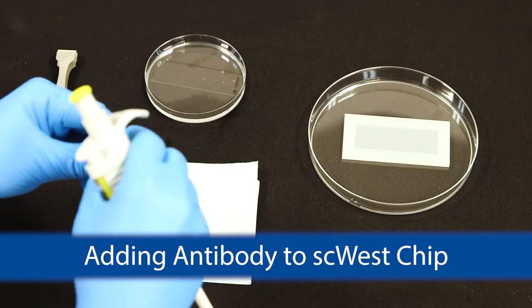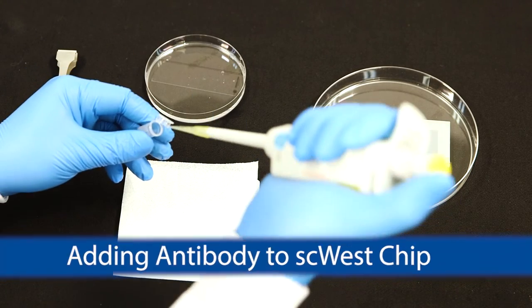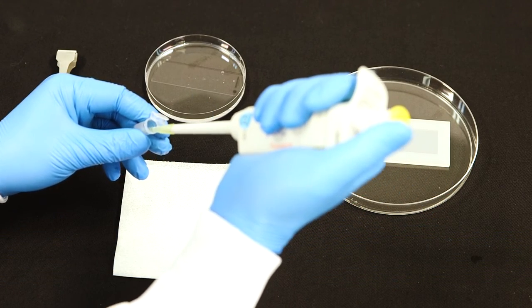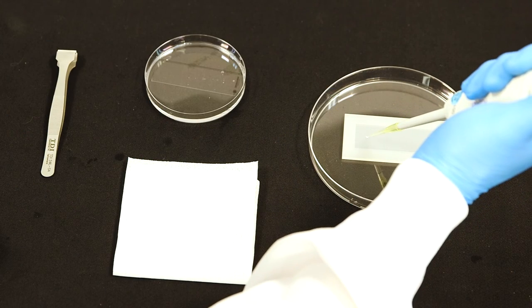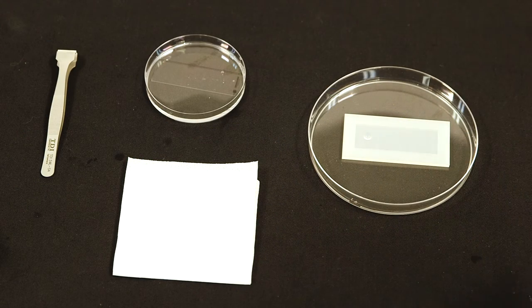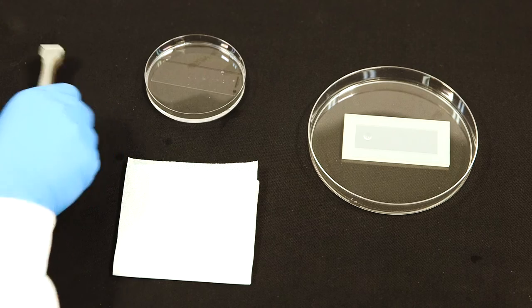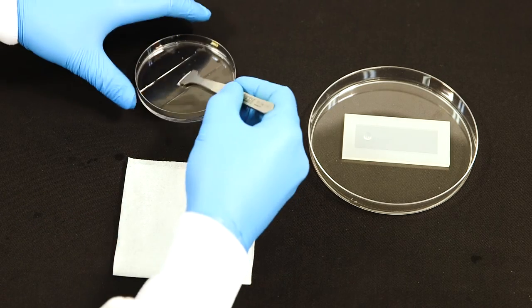Much like the gel surface, it is important to keep the probing fixtures clean, free of dust and other contaminants. Add 80 microliters of your antibody cocktail solution to one end of the probing fixture reservoir.